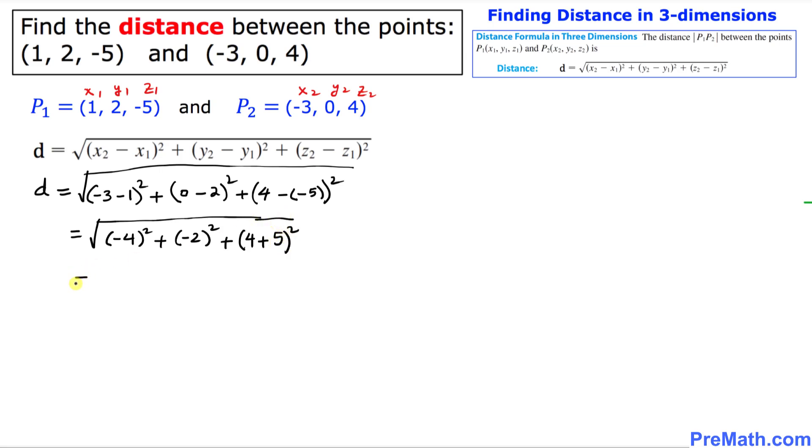So this is going to give us negative 4 squared is 16, plus negative 2 squared is 4, plus 5 squared is 81.